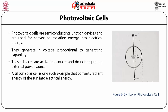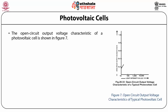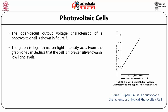A silicon solar cell is one such example that converts radiant energy of the sun into electrical energy. A solar cell is a thin slice of a single piece of p-type silicon crystal — a 2 cm square wafer — into which a 0.5-micron thin layer of n-type material is diffused. The circuit symbol for a photovoltaic cell is shown in figure 6, and the open circuit output voltage characteristic is shown in figure 7.